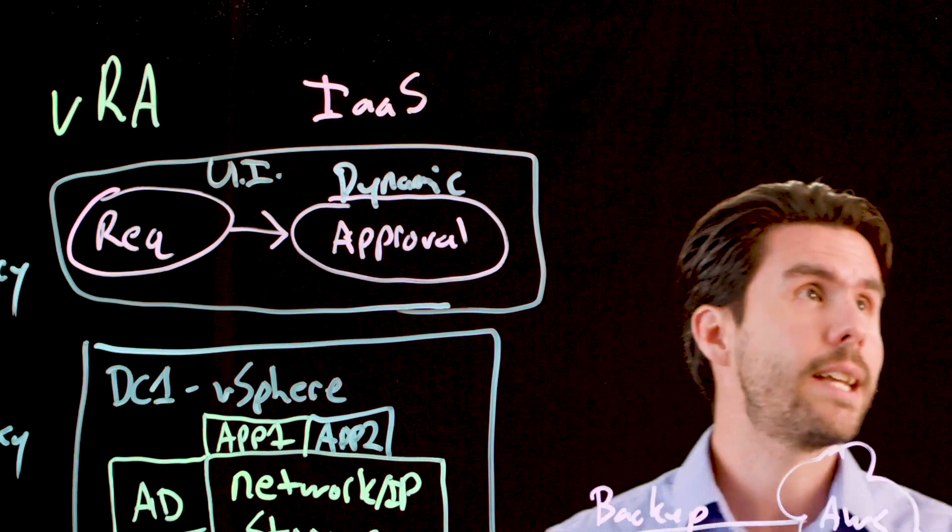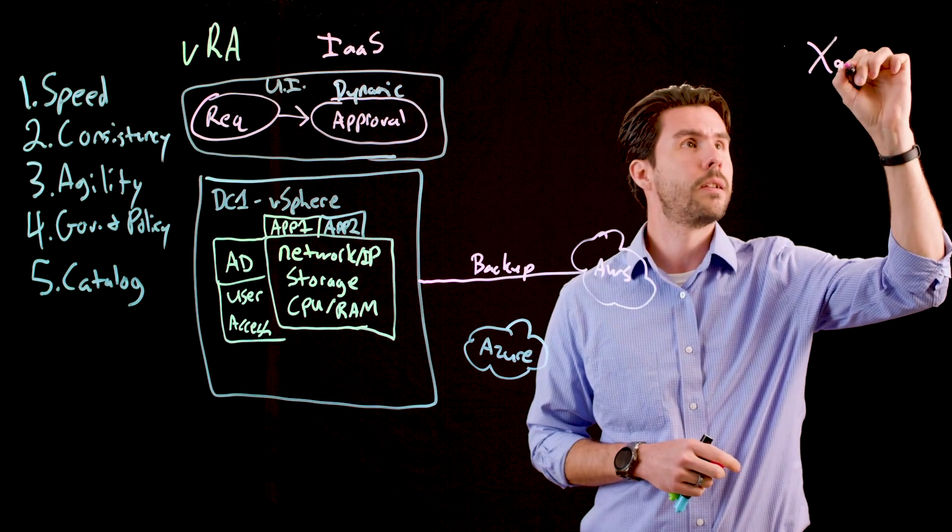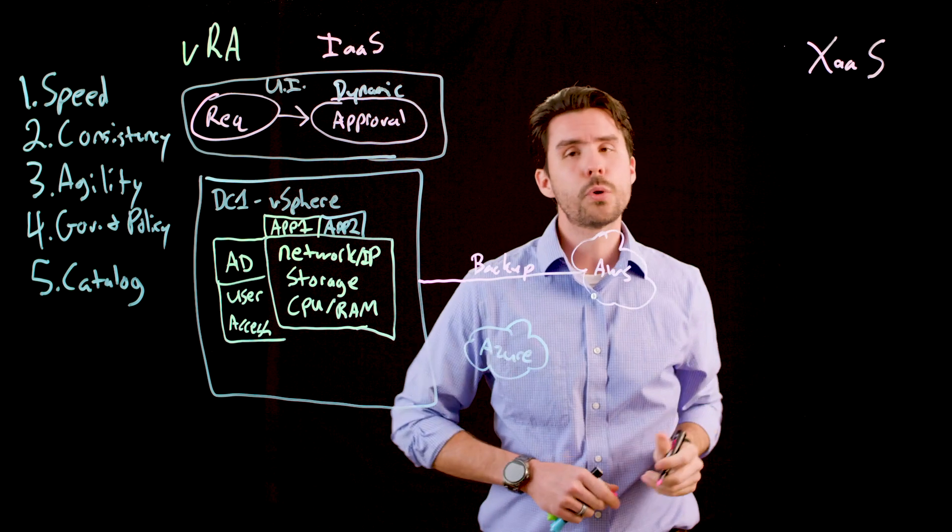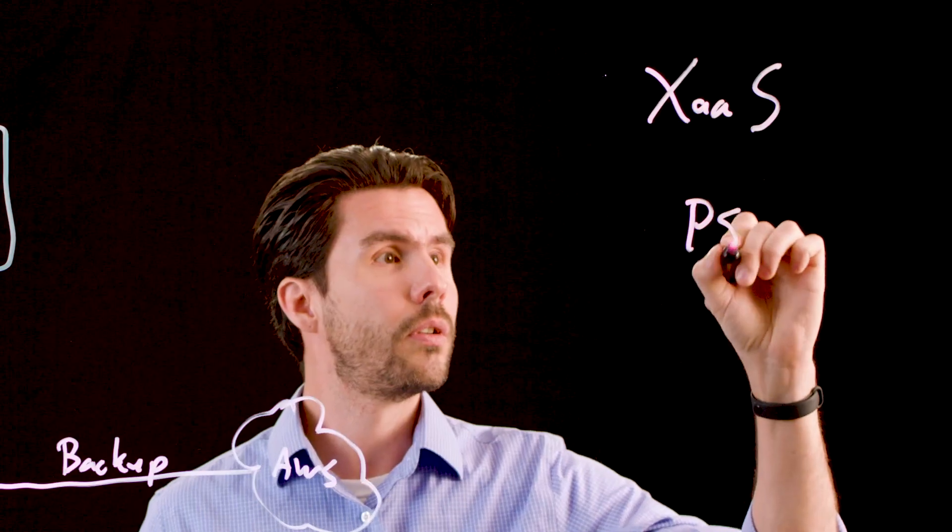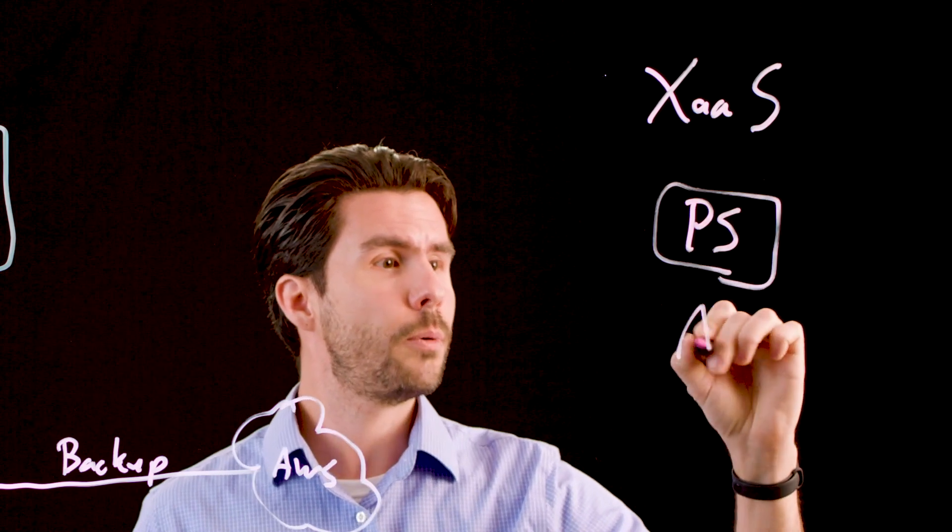There's a second half to VRA, and that's called XaaS, or Anything as a Service. Most organizations have some level of automation already built, whether it's PowerShell scripts, maybe there's some Ansible playbooks, or any other number of automation technologies.